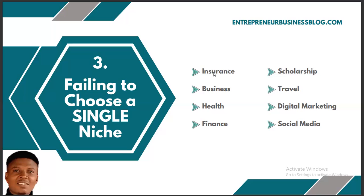Even in health, you can talk about sexual health alone, and within that you can focus on only men or only women. Discuss that area in depth before moving into other aspects. I always recommend you go narrow before you start going broad. In the finance niche, you can pick only loans — talk about loans so well that they classify you as one of the top 50 loan blogs. Or focus on budgeting, then later diversify into savings, investment, and the rest. The same strategy applies to scholarship, travel, digital marketing, and social media niches.